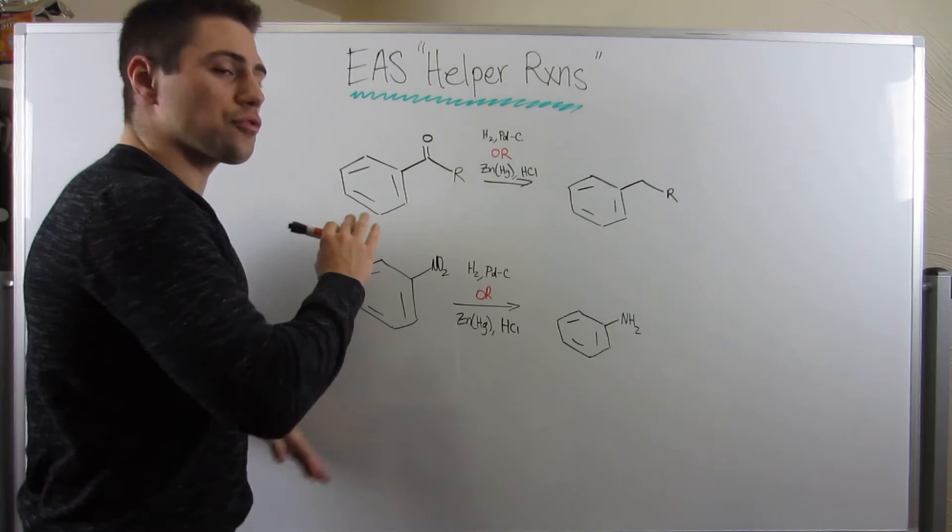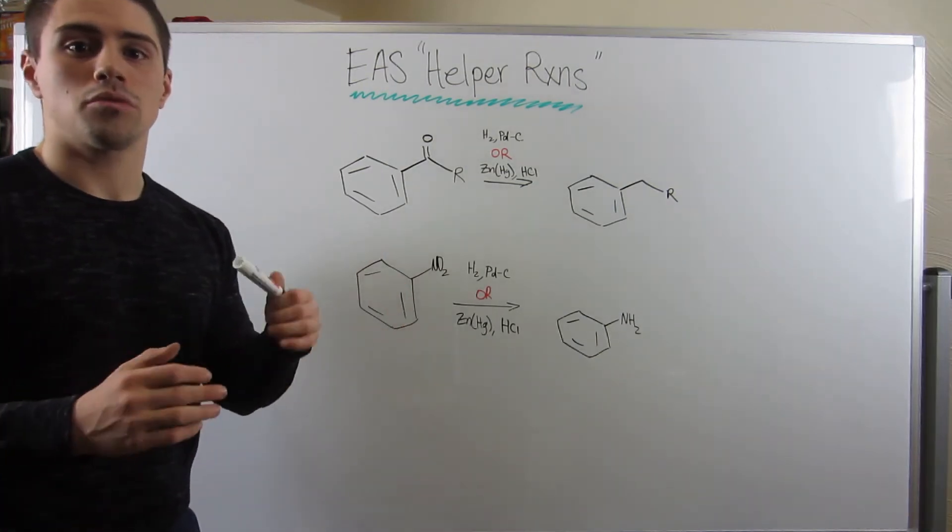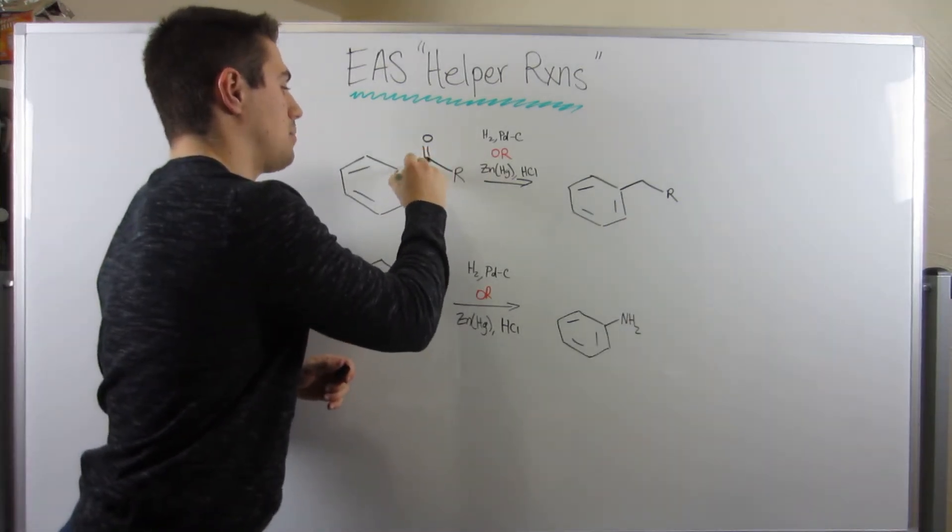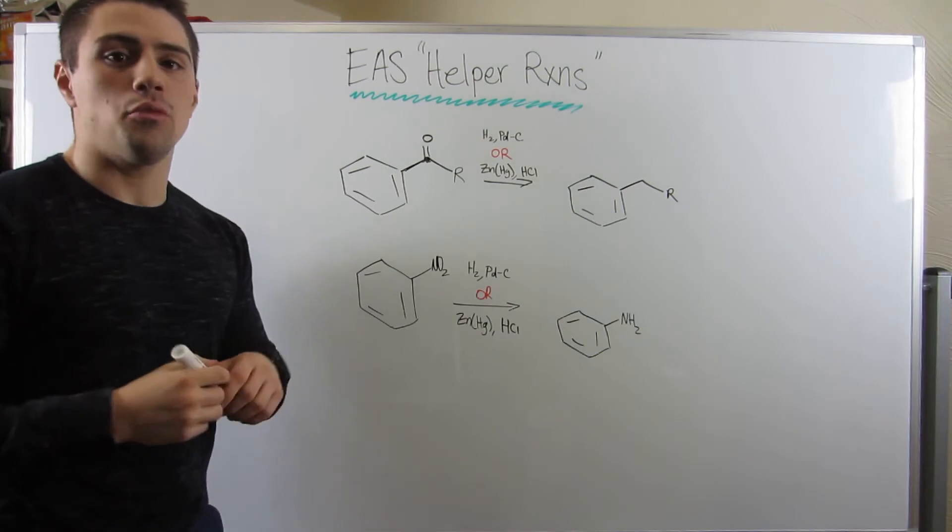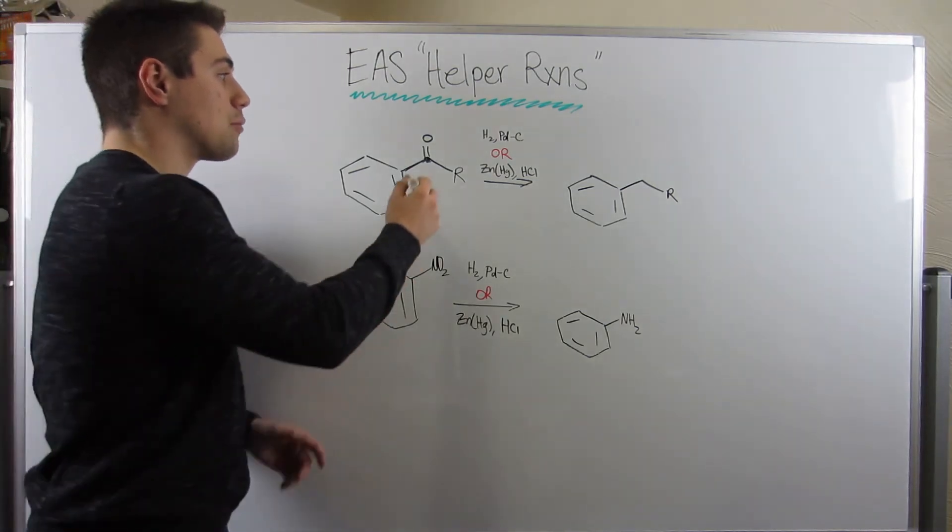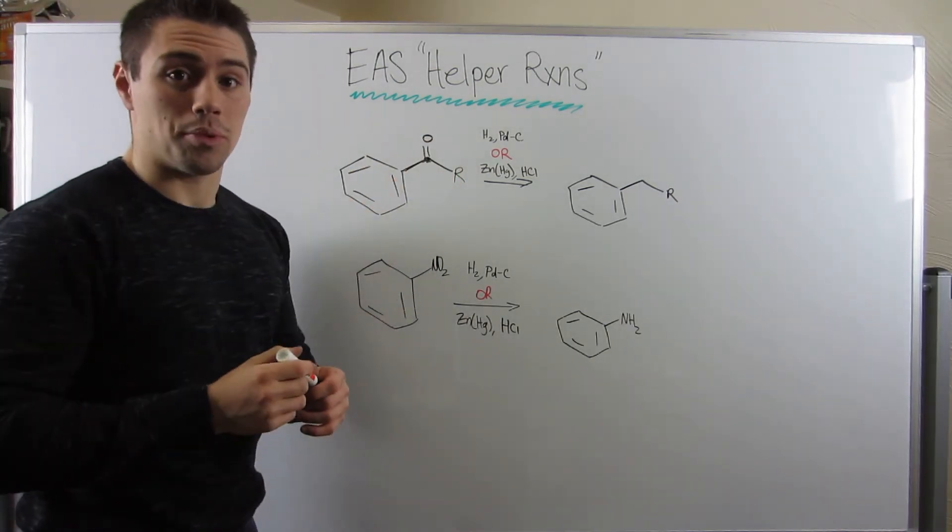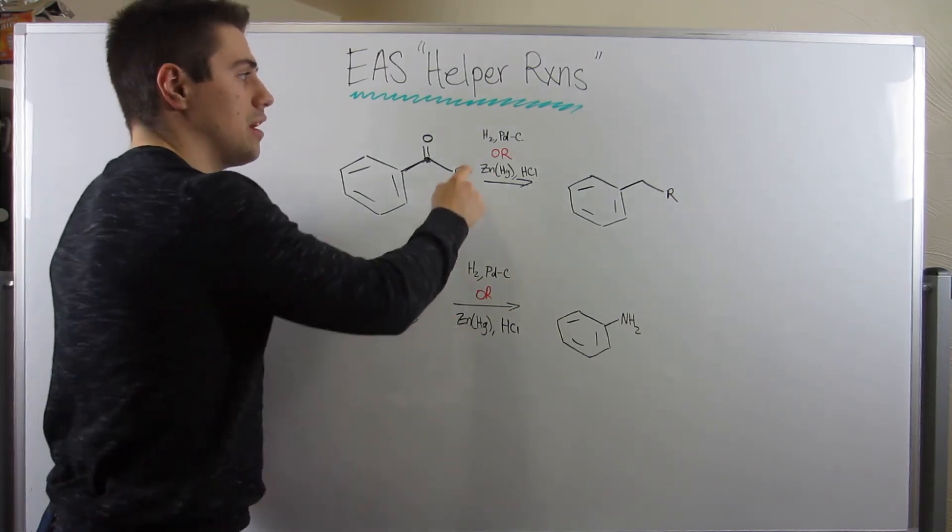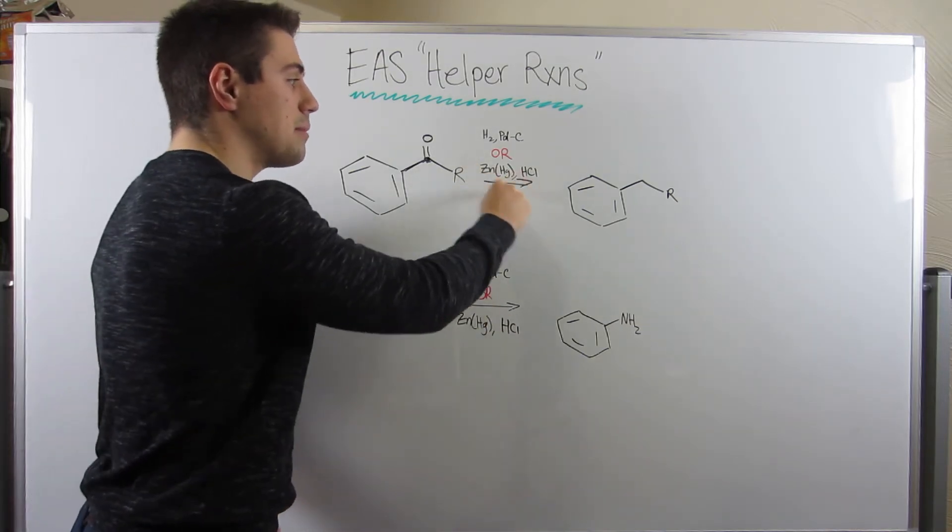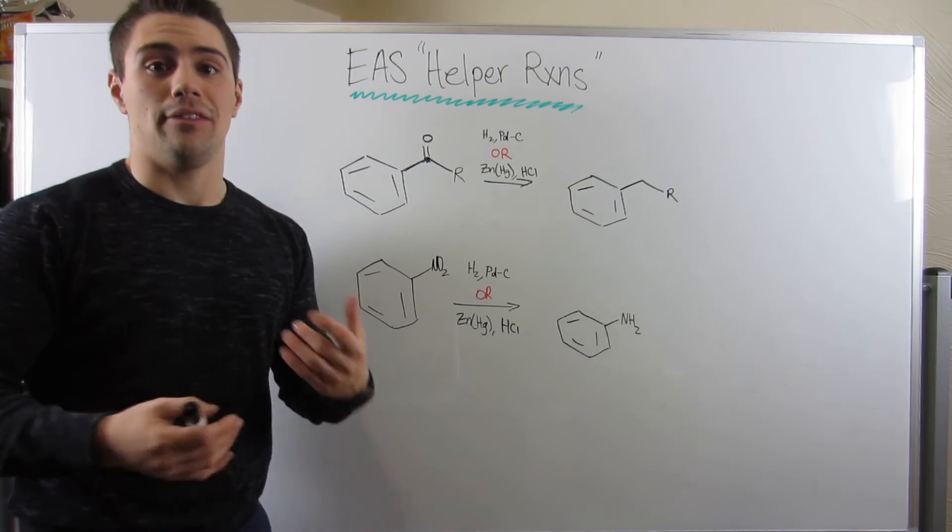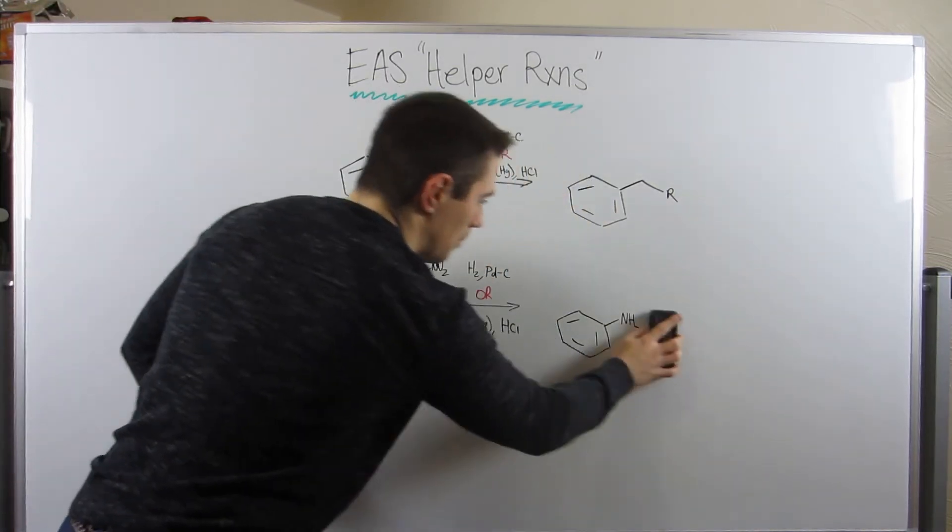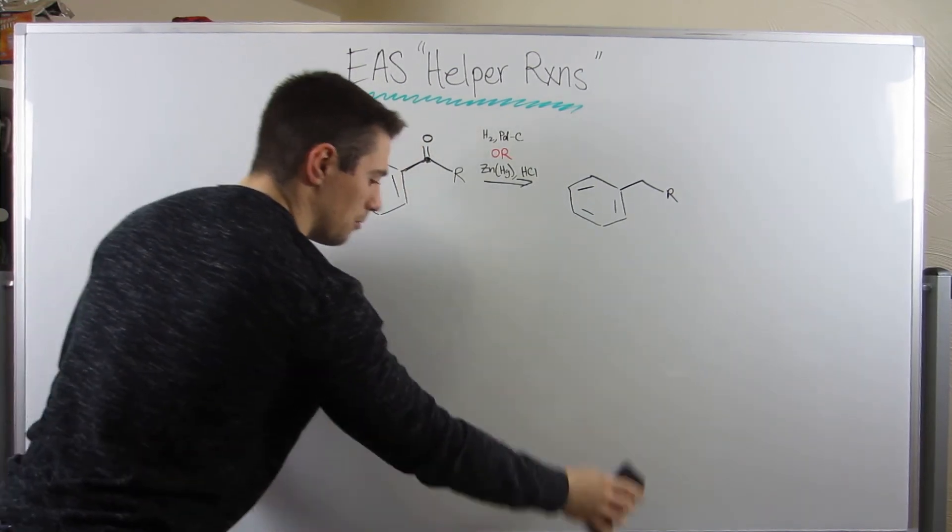So, up top, if you did some Friedel-Crafts acylation, and you had some carbon piece with a carbonyl in this benzylic position, in the position directly off the benzene ring, let's just say you wanted to get rid of it. Maybe you're only interested in a product with no carbonyls at all. Well, we can get rid of these carbonyls in the benzylic position, only in the benzylic position.